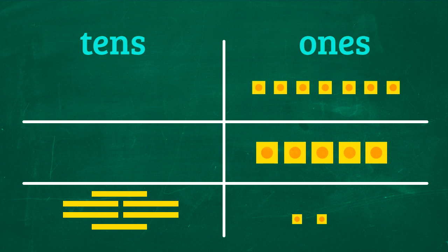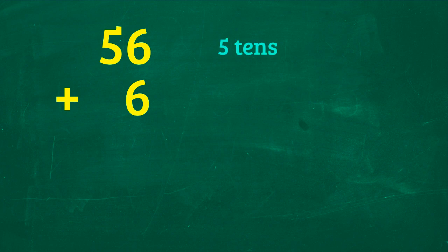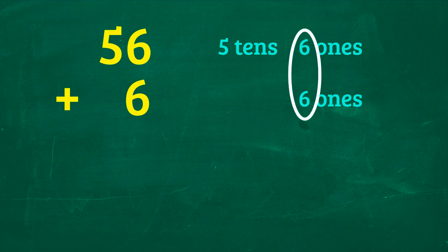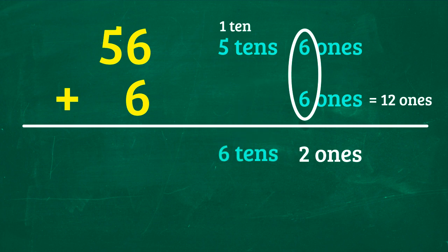Now let's try it without the manipulatives. What is 56 plus 6? Again, group the ones first and add. 6 plus 6 is equal to 12 ones. So we need to regroup it into one 10, two ones. Add the one 10 to the five 10s to get six 10s. 56 plus 6 is equal to 62.